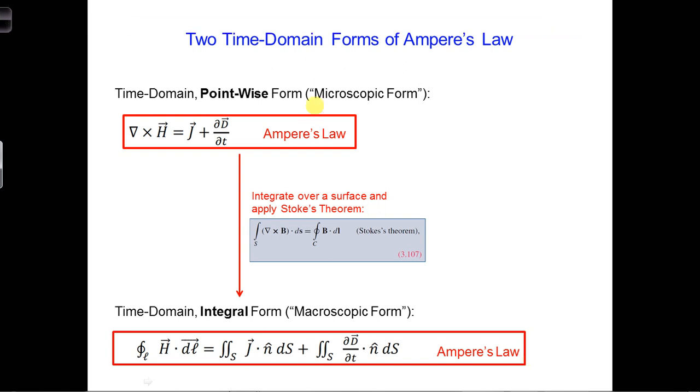First, integrating the point-wise form of Ampere's law over a two-dimensional surface, we get integrating S. We'll take the left-hand side of this equation, so we have the curl of H, and all of that, dotted with n-hat dS, so we're looking at flux through the surface.